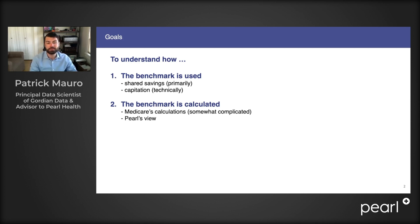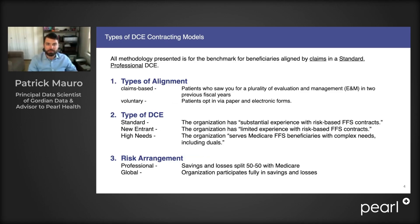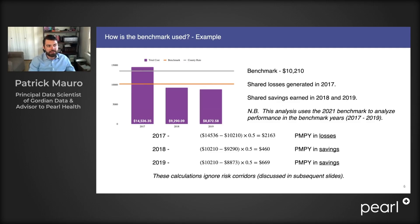Then we're going to get into how the benchmark is calculated. There are a couple of different flavors of direct contracting entities created by this program. We are talking about a standard professional DCE and the benchmark attached to its claims-aligned beneficiaries. Diving into this example of how the benchmark is used, here we are looking at some simulated performance from a provider in the years 2017 to 2019, and we've calculated a benchmark for them.